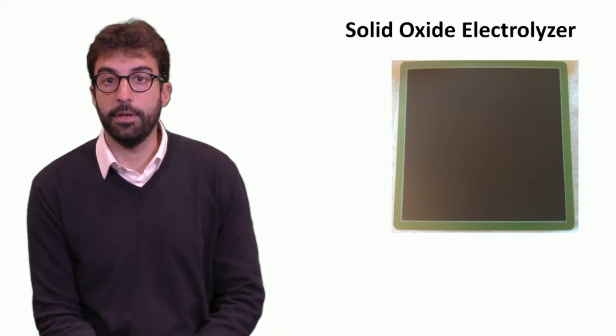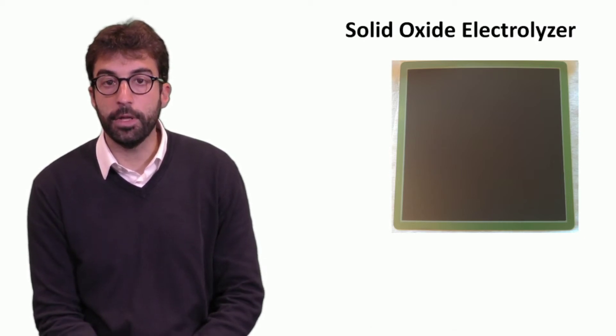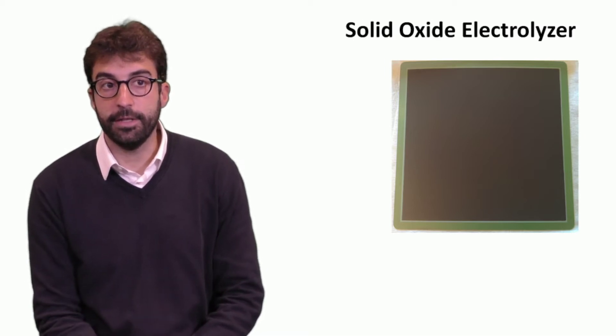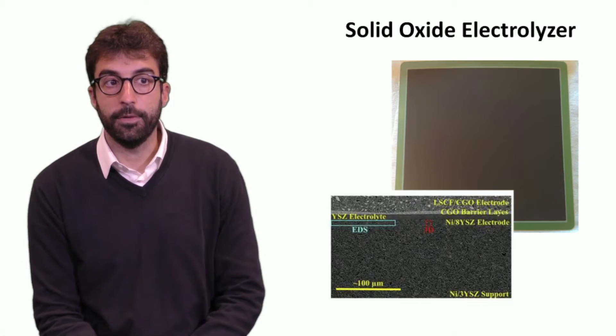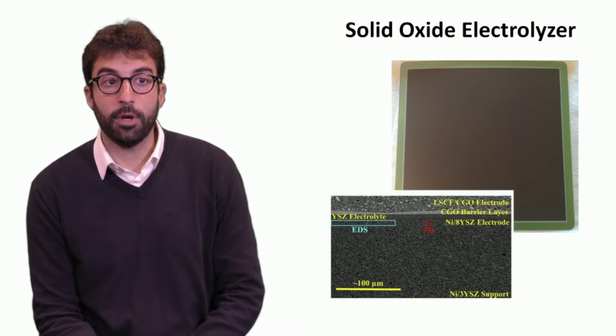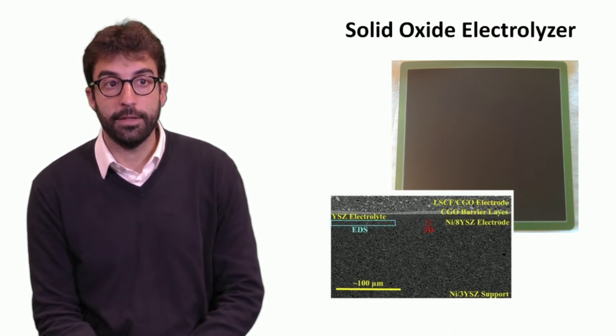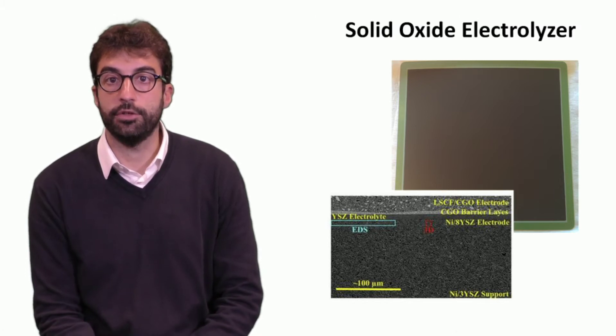This is an image of a cell. You can see the black part that is the oxygen electrode and the green part that is the oxidized nickel, which can change color when in operation. This is also a SEM microscopic image of the three layers. You can see that the electrolyte is extremely thin, because we want to reduce as much as possible the polarization losses.